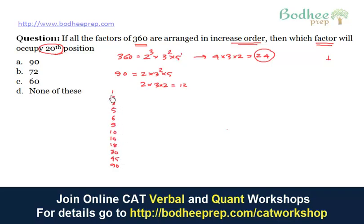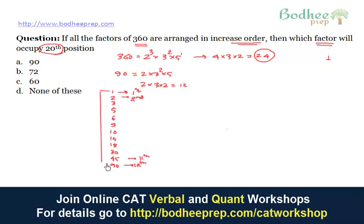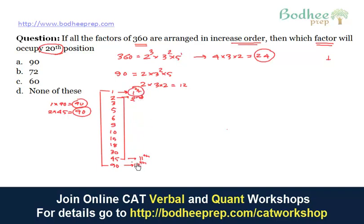Now the key point to observe: marking the position numbers, 1 is at the 1st position, 2 is at the 2nd position, 90 is at the 12th position, and 45 is at the 11th position. If I take the product of the 1st and last factor — 1 and 90 — it equals 90, the number itself. Similarly, the product of the 2nd and 2nd-last also equals 90. From this illustration, we can observe that the sum of position numbers in all such pairs will always be 13.